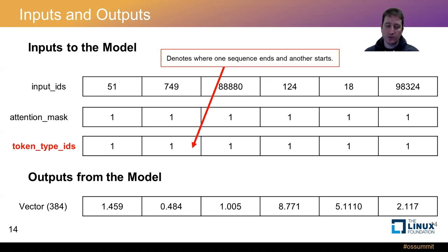Token type IDs denotes where one sequence ends and another starts. And so since we are only doing one sentence in this example, we only have one sequence. So each value in this array is one. There may be times another NLP task or even here, if we have multiple sentences, multiple sequences, we can use this to denote where one sentence or sequence starts and where another one begins.